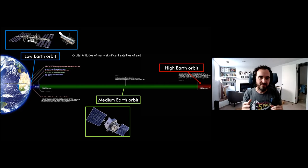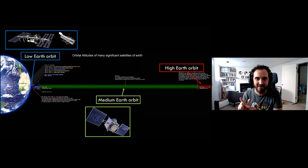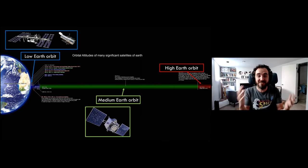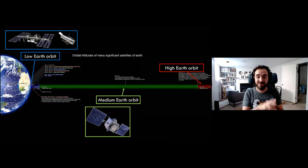In medium Earth orbit, one of the most important satellite types ends up there — GPS. When you pick up your phone and open Google Maps, it's a satellite in medium Earth orbit that talks to your phone. There are actually several constellations now: GPS, GLONASS, and others. Lots of countries are building their own global navigation systems, all based on satellites sending out radio signals to our devices.